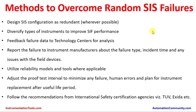Methods to overcome random SIS failures include: designing SIS configurations as redundant wherever possible; diversifying the type of instruments to improve safety instrumented function (SIF) performance; feeding failure data back to technology centers for analysis when there are multiple and repeated failures; and reporting failures to instrument manufacturers about the failure type, incident time, and any issues with field devices, so that design improvements can be made.